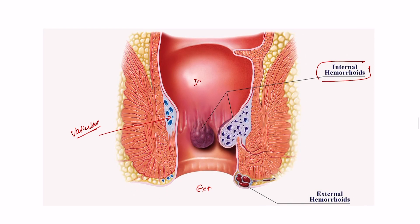However, in patients who have chronic constipation and chronic straining, this vascular cushion will become engorged. Engorgement alone doesn't necessarily mean a problem will occur. It only becomes pathological when the patient starts having symptoms.